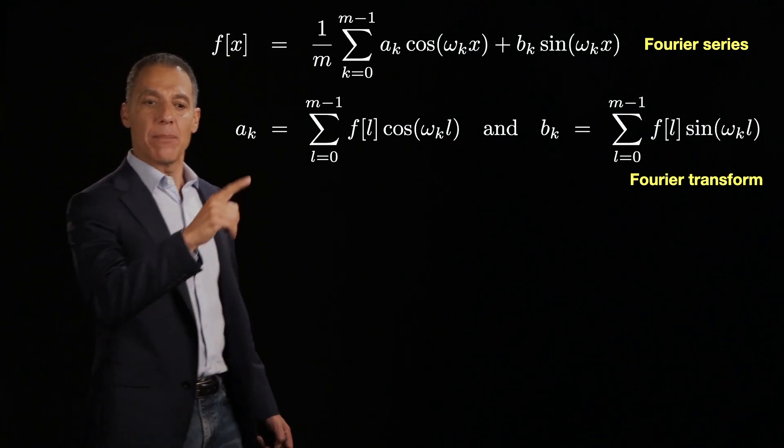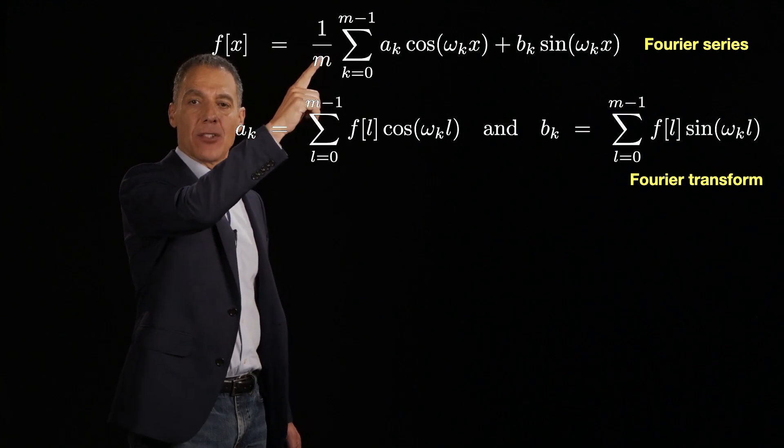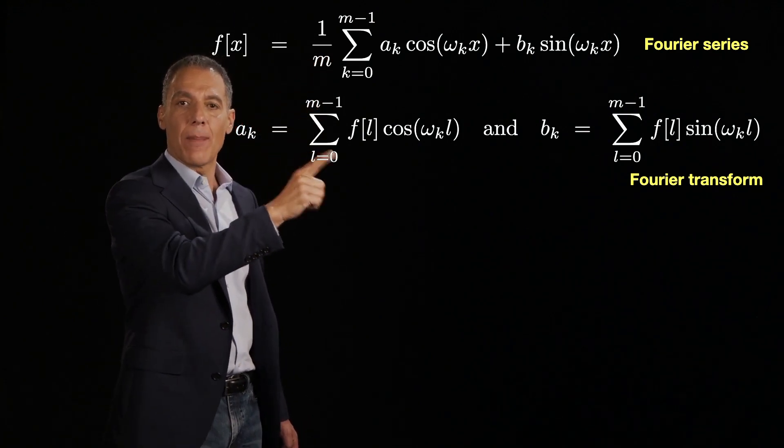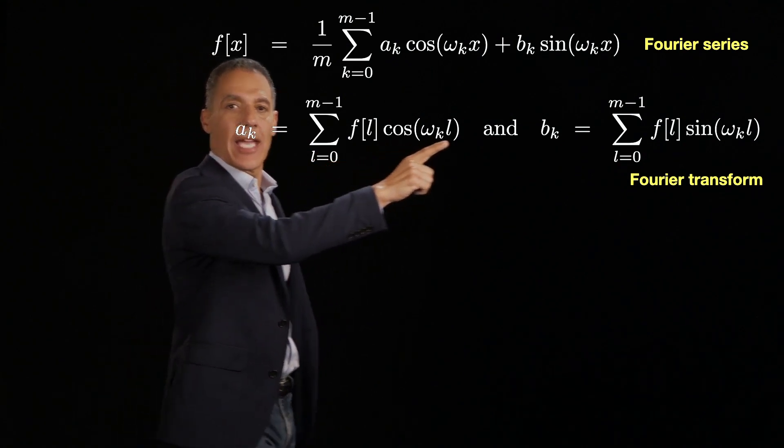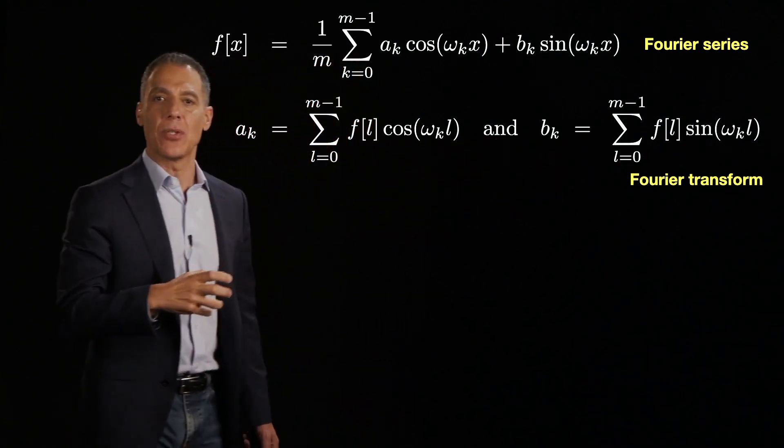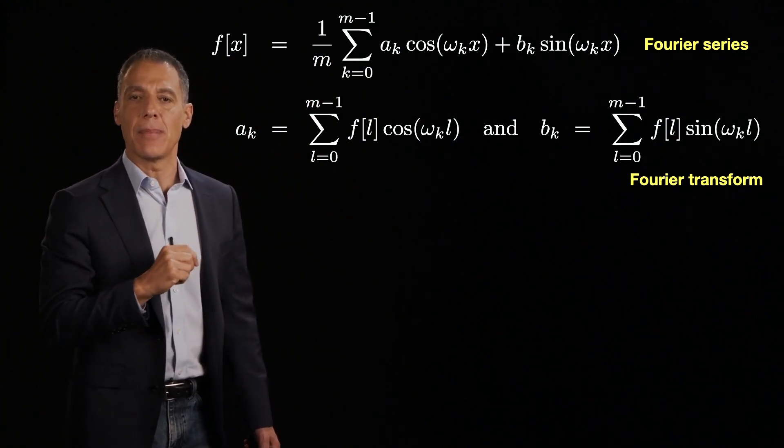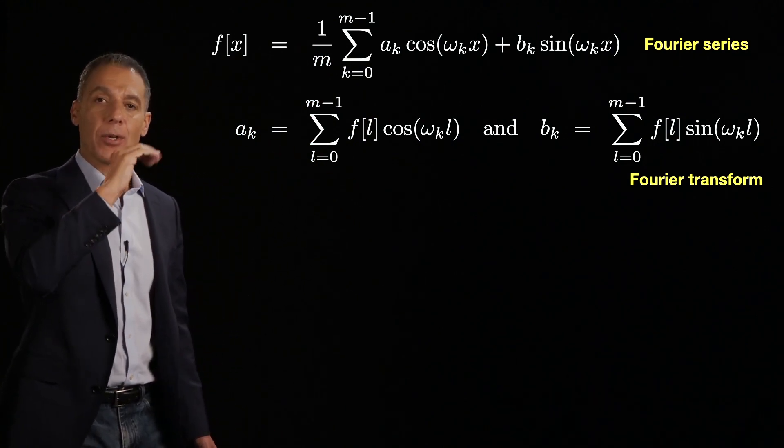And the Fourier transform tells you how. How do you represent it? And again, because this basis representation is orthonormal, the representations a_k and b_k are simply computed as a dot product.